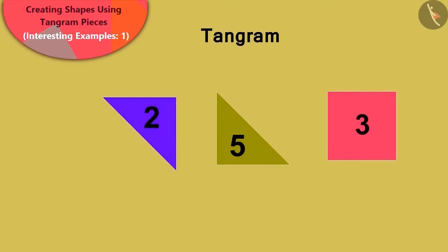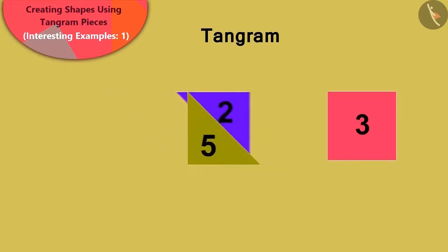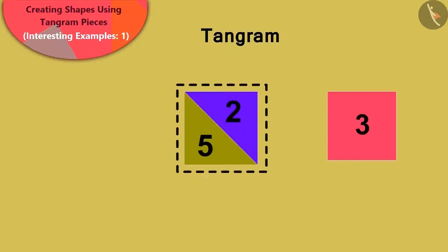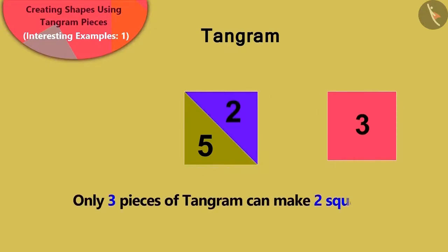Well done, children! Your answer is absolutely correct! The piece number 3 is a square and we can join pieces number 2 and 5 this way and make a square.